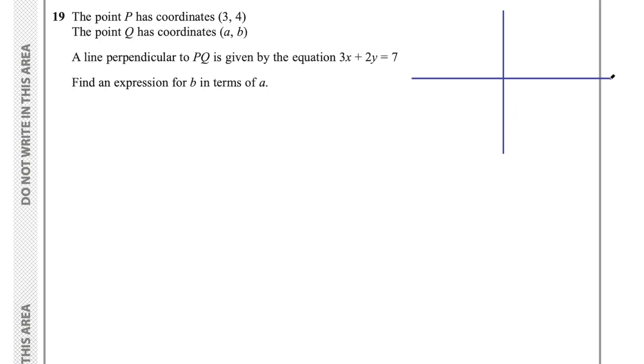So if we draw our axes, and then we have some line PQ. Now Q could be anywhere because it has coordinates A, B, meaning they could be any numbers. But let's just make up a line, let's say the line looks like this.